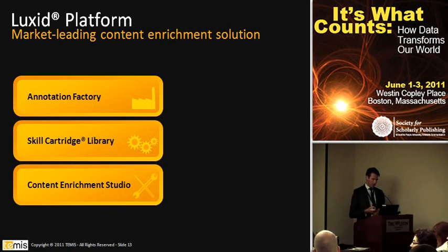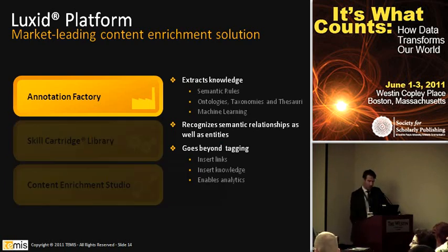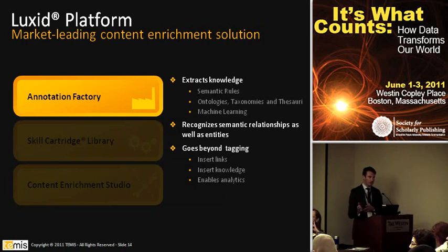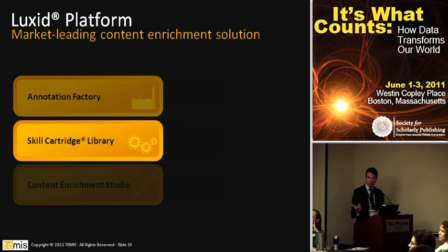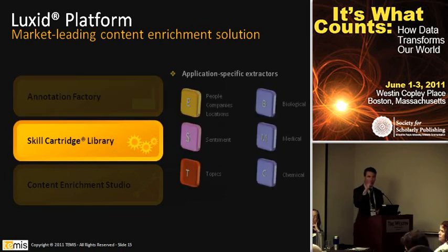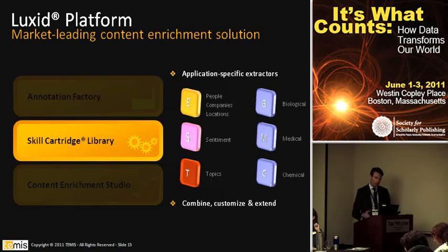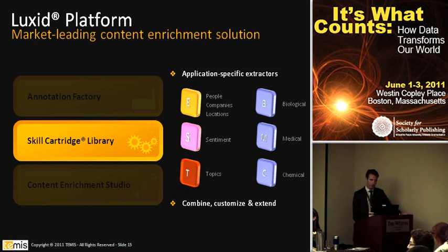So how does it work — what's under the hood? Here's how we structure the Luxit platform. First there is what we call the annotation factory — this is the grinder. This is where the XML gets in and the enriched XML gets out. What's interesting is what's happening within the annotation factory. It's a mix of different things. Some of it is statistical — if you do categorization, you learn from a data set of documents and then apply the categorization. Some of it is machine learning — you ask a human to tag a few things and then the machine learns from this. And then most of it is based on semantic rules that we can write, or the publisher can write, or that we have off the shelf for specific domains like biology, chemistry, medical, etc. It's also based on third-party ontology — if you have medical content and want it annotated with MeSH, the MeSH can be fairly easily turned into a skill cartridge.